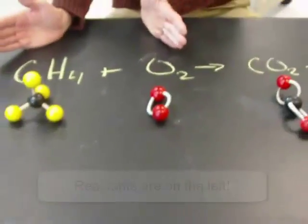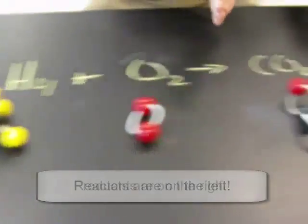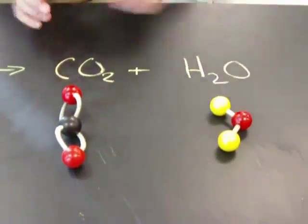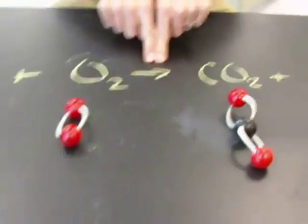Now when I say both sides of the equation, I mean on either side of the arrow. This side over here is called our reactants. That's what we start with. This side over here is called our products. That's what we're producing in the chemical reaction. So when I say both sides, it's separated by the arrow.